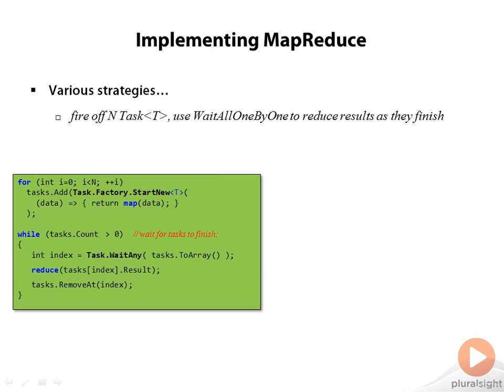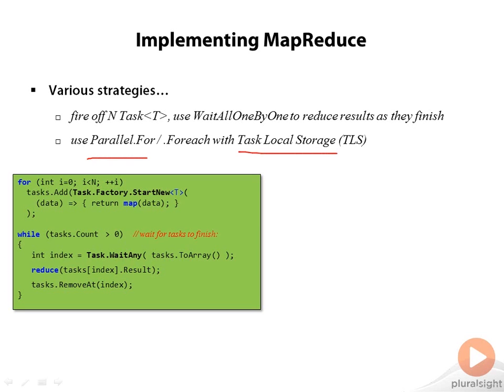Another common approach is to use a parallel loop combined with the notion of task local storage. This has the advantage of offloading the responsibility of data distribution to the Task Parallel Library, since the TPL partitions the workload for us as part of the execution model for the parallel loop.